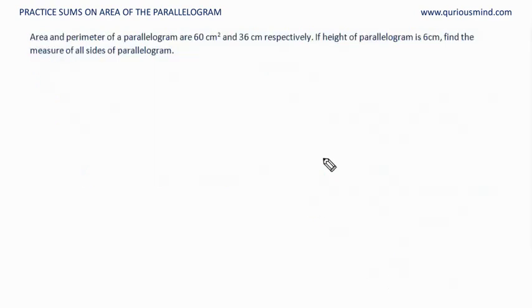Let's do the next one. Area and perimeter of a parallelogram are 60 cm square and 36 cm respectively. If height of parallelogram is 6 cm, find the measure of all sides of parallelogram. Let's draw a rough parallelogram. Okay, and height here. Now height is 6 cm.